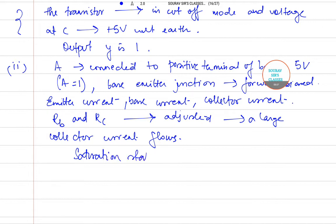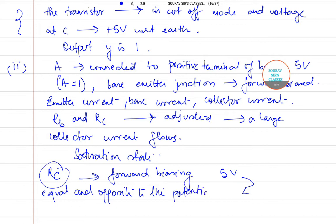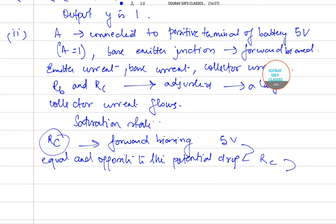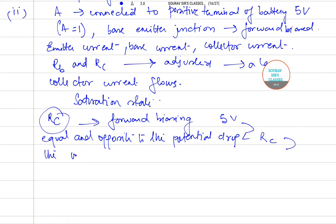The voltage drop across RC due to forward biasing is just equal to 5 volts, which is equal as well as opposite to the potential drop across RC due to battery in collector circuit. Hence, the voltage at C is actually 0 volt, and therefore our output Y becomes 0.